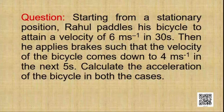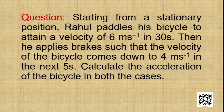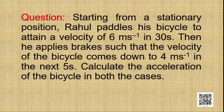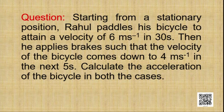Here is the question: Starting from a stationary position, Rahul pedals his bicycle to attain a velocity of 6 meter per second in 30 seconds. Then he applies brakes such that the velocity of the bicycle comes down to 4 meter per second in the next 5 seconds. Calculate the acceleration in both cases. What information do we have? Rahul starts from stationary, so initial velocity is 0. It reaches 6 meter per second in 30 seconds — the velocity has increased, so there will be some acceleration to calculate.